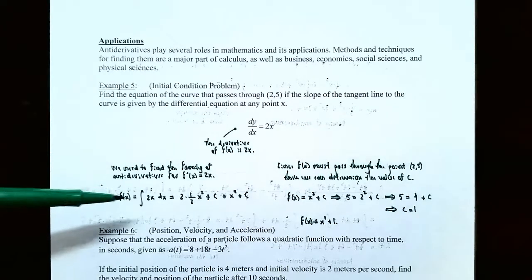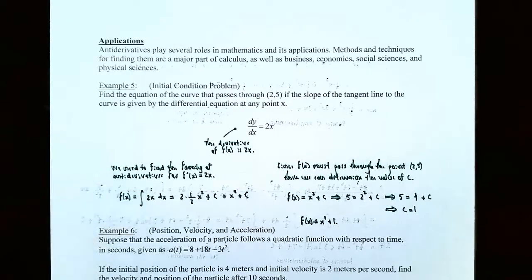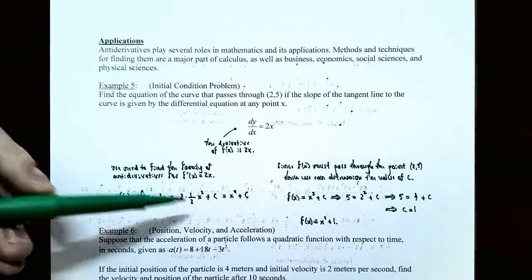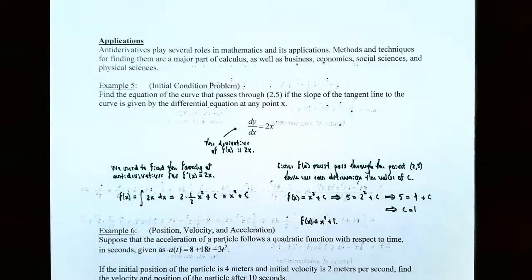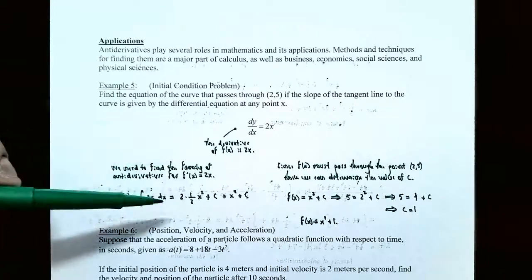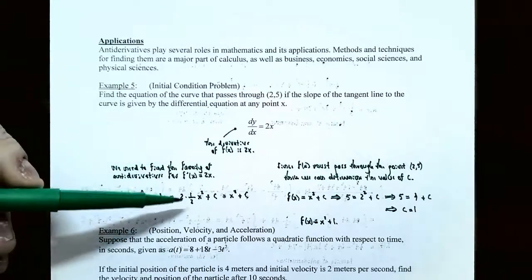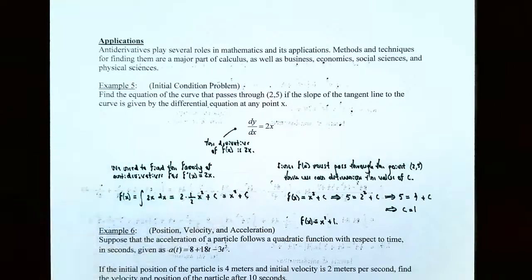So capital F(x) is the indefinite integral of 2x dx. We want to find the antiderivative of 2x. Two is the coefficient, so you keep it. X is a power function and x is raised to the first power, so you add 1 to the exponent and then divide by the new exponent. So it would be 2 times one-half times x squared plus C for the family of antiderivatives. If you simplify, 2 times one-half is 1, so 1 times x squared, or just x squared plus C.